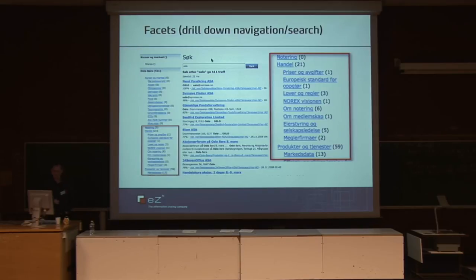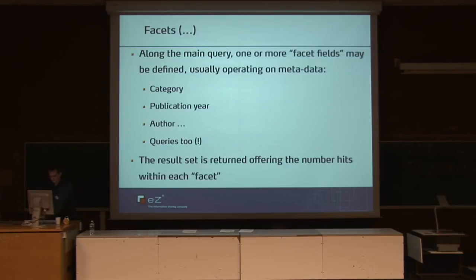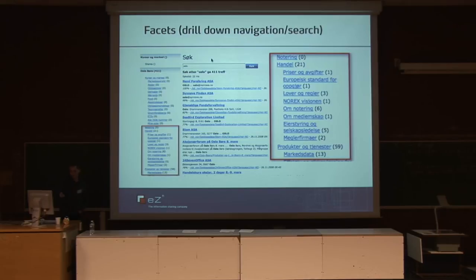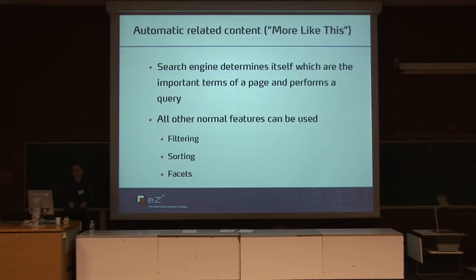Facets — the illustration here says enough. On the right you see a kind of navigation menu which just shows the hits for the query that you entered. Basically, along the main query you can specify fields, like typically metadata, as well as queries, and these can be used to build user interfaces required for very fast navigation to the results you want.